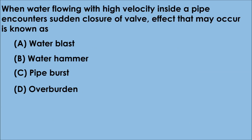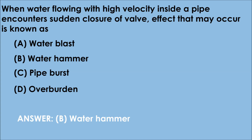Question 5. When water flowing with high velocity inside a pipe encounters a sudden closure of a valve, the effect that may occur is known as: A. Water blast, B. Water hammer, C. Pipe burst, D. Overburden. The correct answer is option B — this effect is known as water hammer.